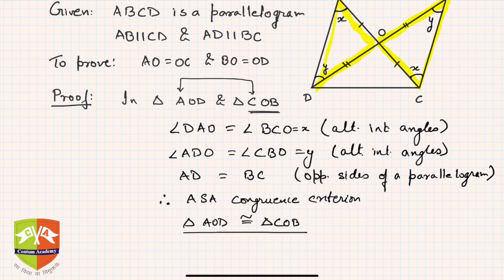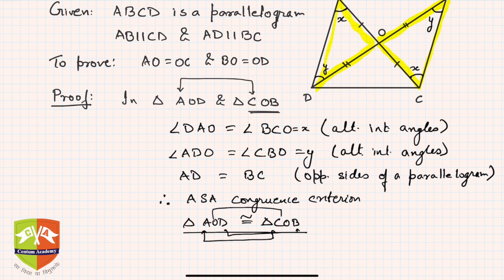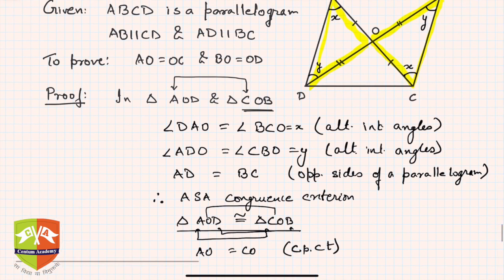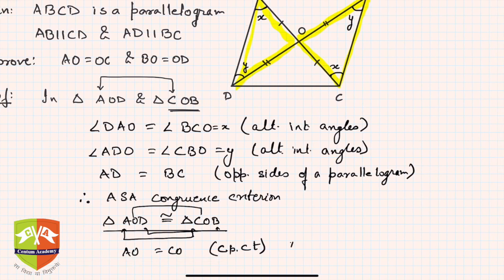We get triangle AOD is congruent to triangle COB. The order of vertices is very important — angle A must correspond to angle C, O to O, and D to B. Hence, AO is equal to CO by CPCT (corresponding parts of congruent triangles). Similarly, DO is equal to OB by CPCT. Hence proved.